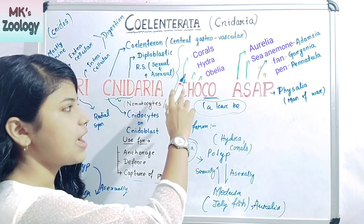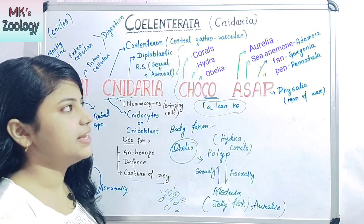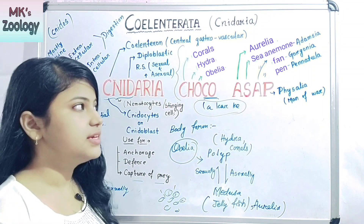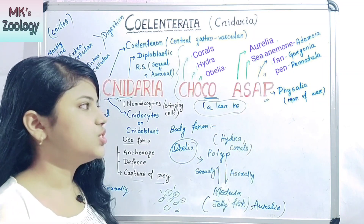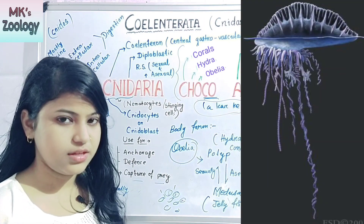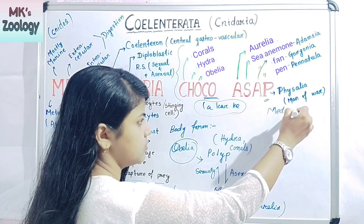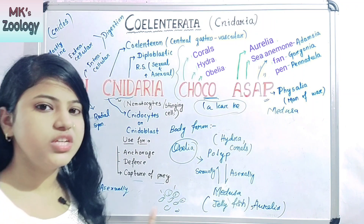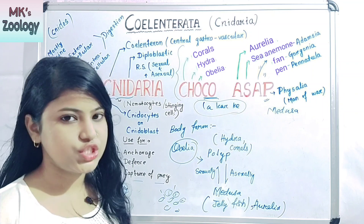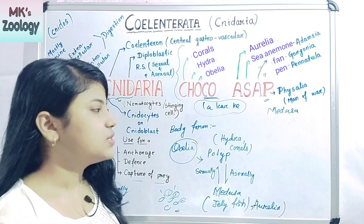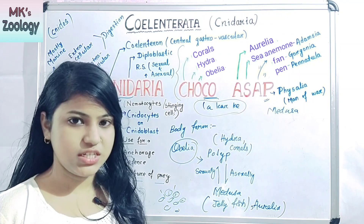So the examples are: corals, Hydra, Obelia, Aurelia, sea anemone, sea fan (Gorgonia), sea pen (Pennatula). The next letter P stands for Physalia, which is a medusoid type — also known as the Portuguese man-of-war. It is a kind of jellyfish.